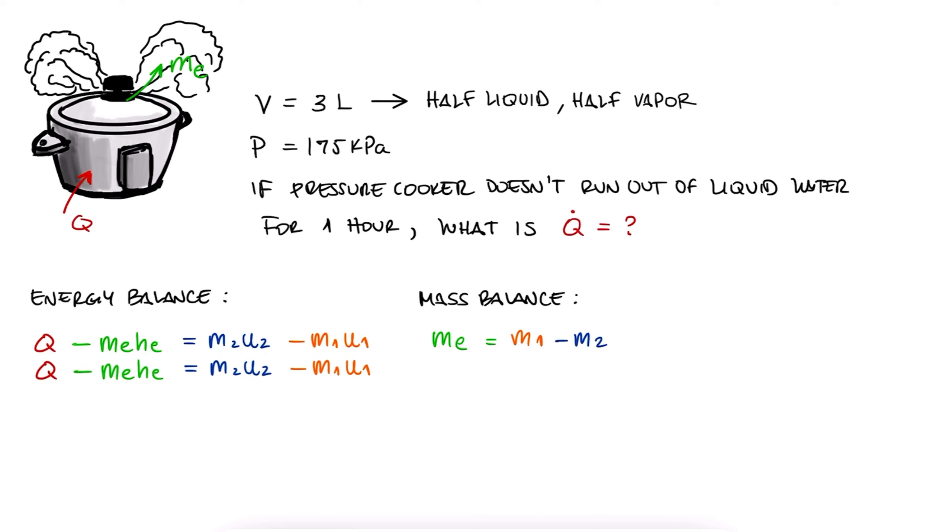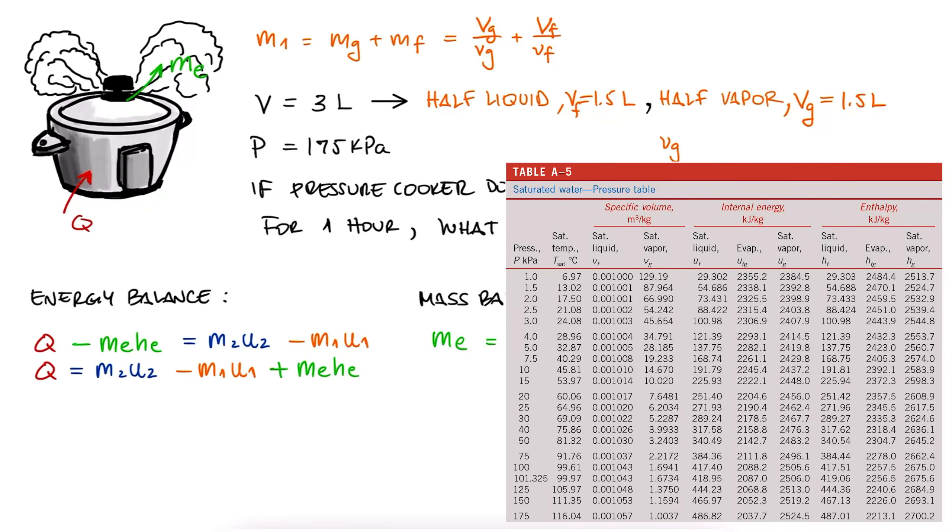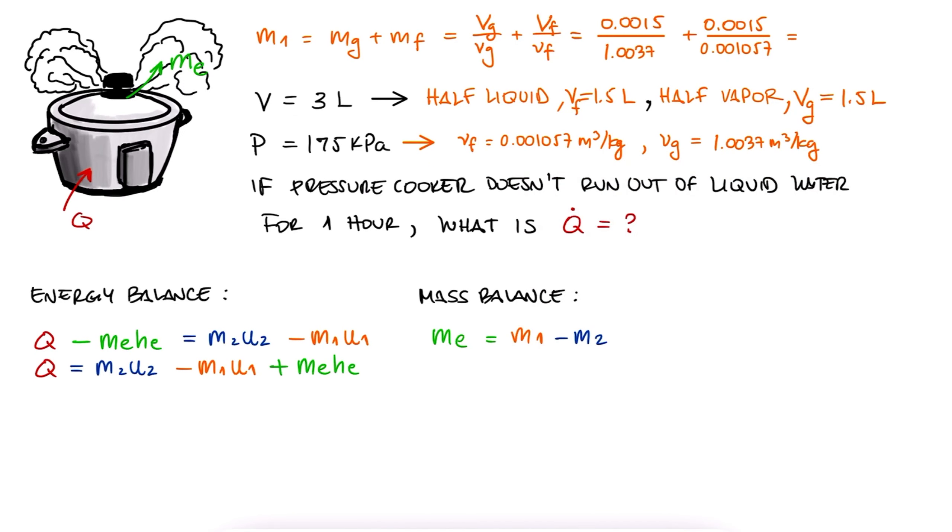This means that to find Q, we have to find everything else. Let's start with the masses. The mass M1 is what we have at the beginning, a combination of steam and liquid. These masses can be written as volume over specific volume and we know that half of the volume is vapor and half is liquid. We look up the specific volumes Vg and Vf for 175 kilopascals and with them we can calculate mass 1.